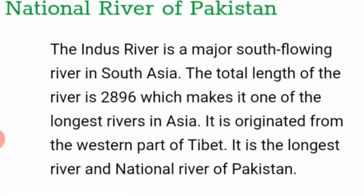The national river of Pakistan is the Indus River, a major south-flowing river in South Asia. Its total length is 2,896 km, making it one of the longest rivers in Asia. It originates from the western part of Tibet and is the longest river and national river of Pakistan.